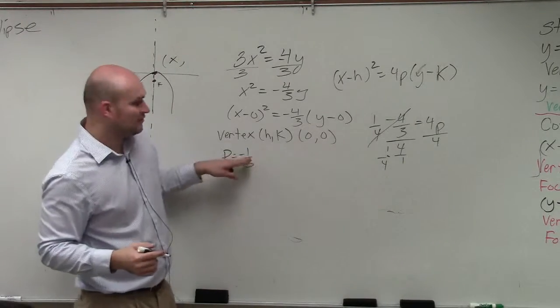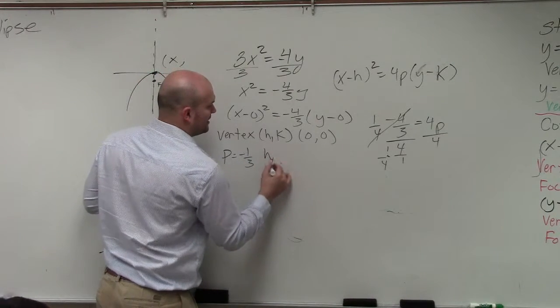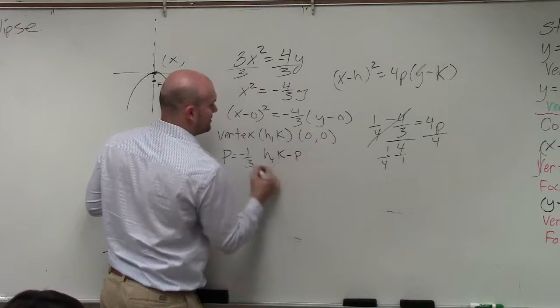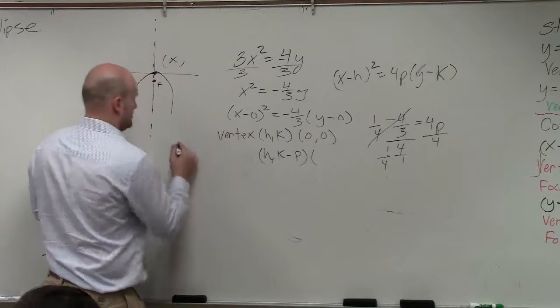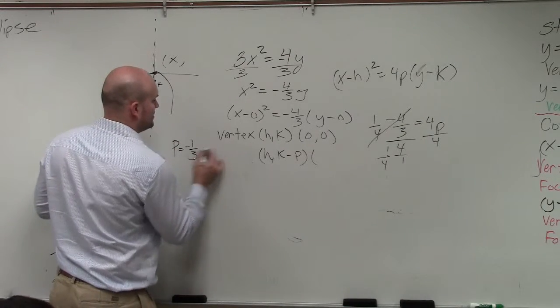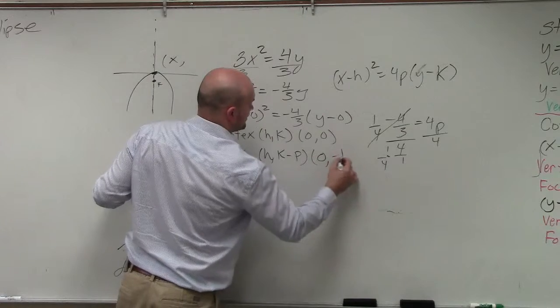So therefore, for the focus, it's going to be, remember if you guys remember the formula, it's h comma k minus p. So in this case, my focus. So p is equal to negative 1 third. So my focus is going to be 0 comma negative 1 third.